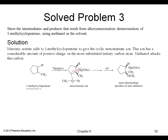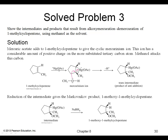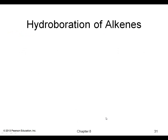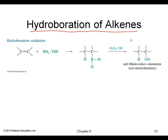Here's another example where we end up with the Markovnikov ether as the product. Our next reaction is the hydroboration of alkenes.